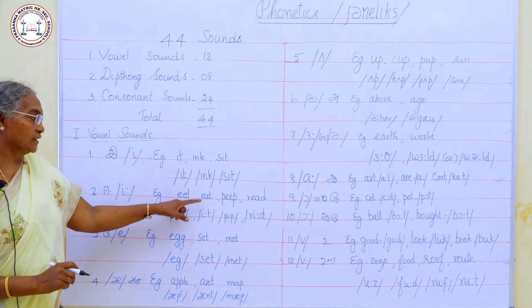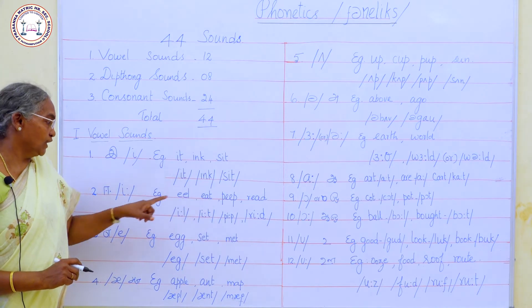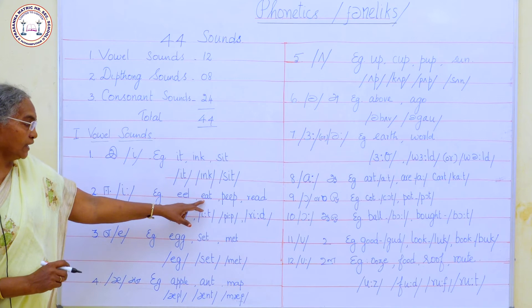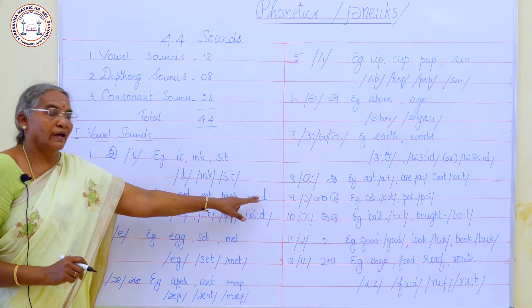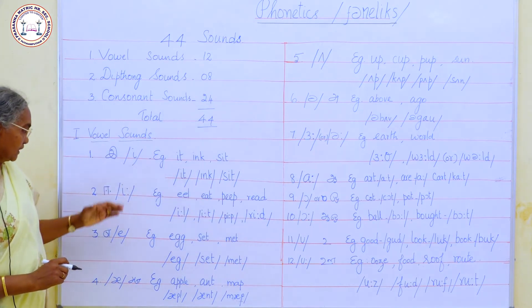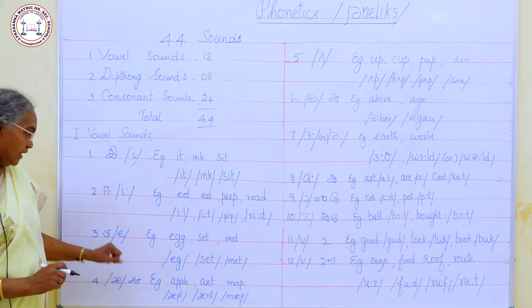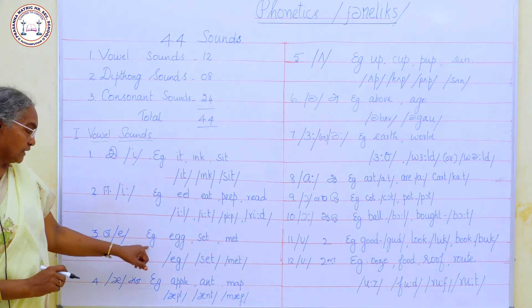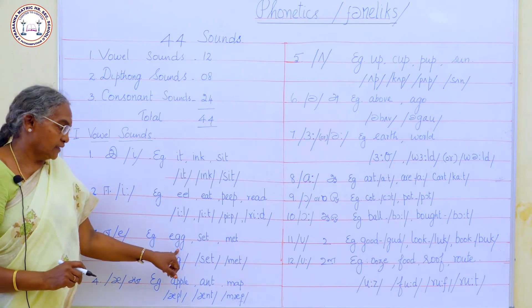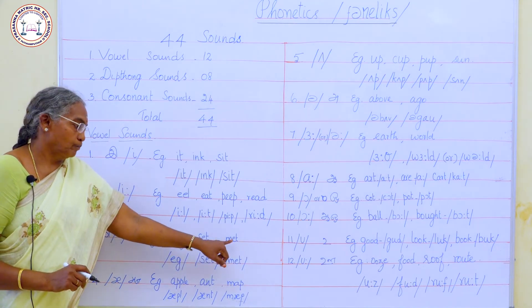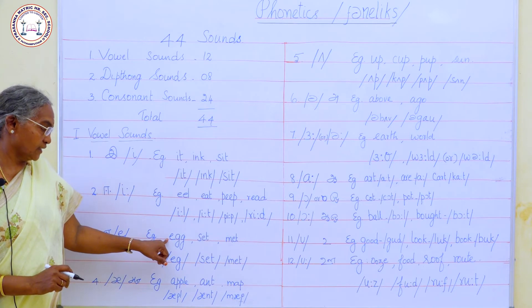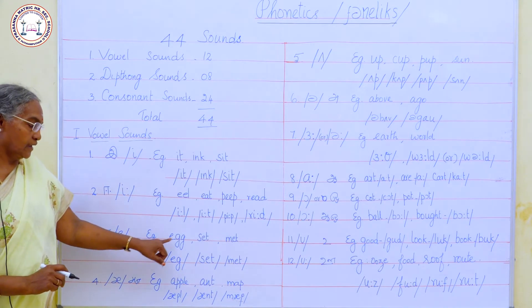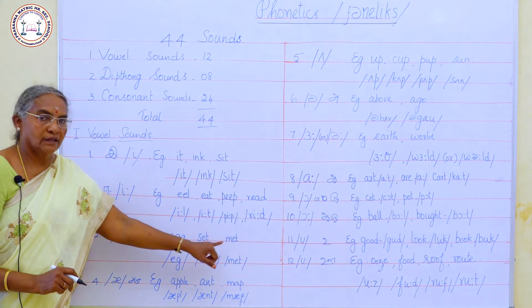The next vowel sound is 'eɪ'. Examples: say, make — they use this 'eɪ' symbol. Following that is the 'æ' sound. Examples: apple, ant, map — they use the æ symbol.